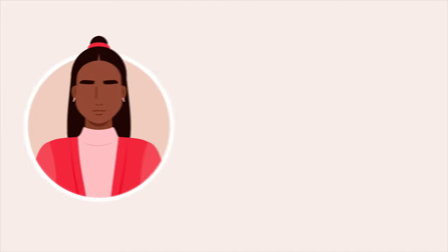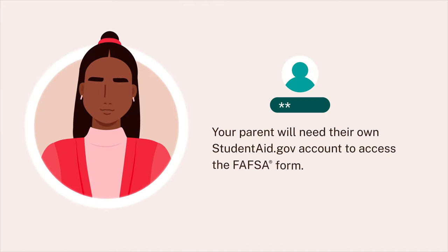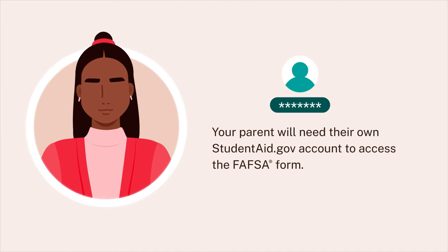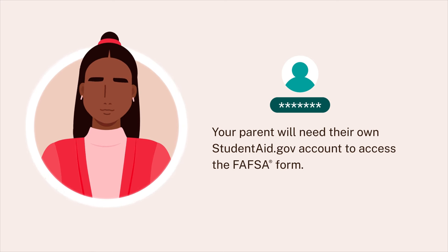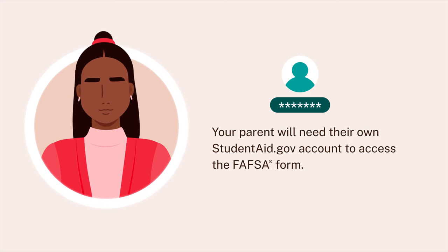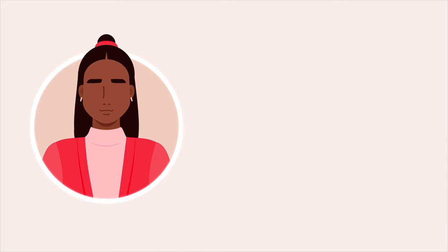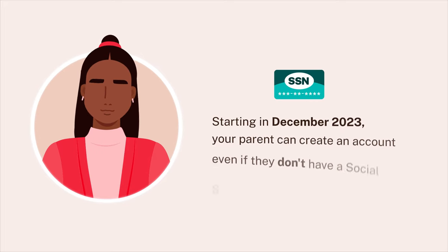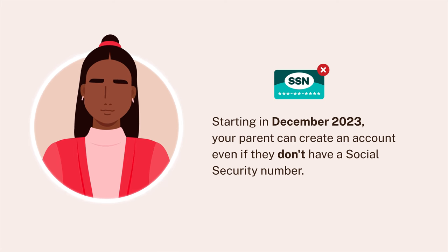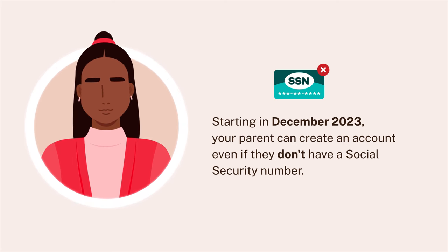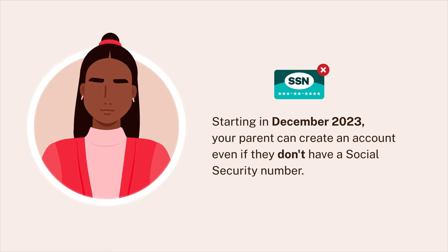In order to fill out their section and sign the FAFSA form electronically, your parent, like all FAFSA form contributors, will need their own studentaid.gov account. Starting in December 2023, if your parent doesn't have a social security number, they can create an account to complete the required section of the 2024-25 FAFSA form.